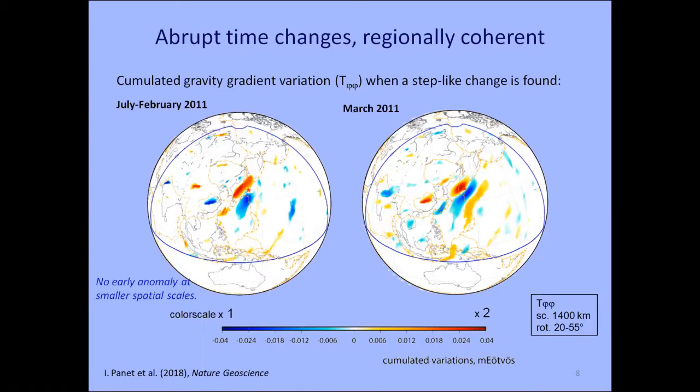We carried out two different kinds of analysis: one where we analyze the entire time series including years of observation after the rupture, and another where we stop the time series in February 2011, so we don't know there will be a rupture coming. Near Japan, both agree quite well, so I will present the first one. In this approach, we search for step-like changes in the time series and do not impose the exact timing of the step — it could start a few months before or after March.